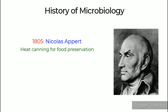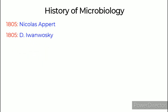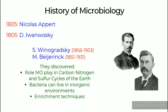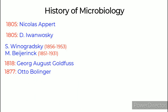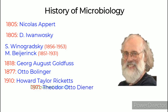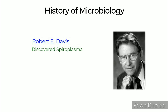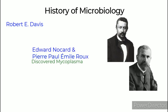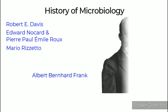History of General Microbiology: 1805 — Nicholas Appert discovered heat canning for food preservation. D. Ivanowski used filter techniques to discover viruses. Winogradsky and Beijerinck discovered the role microorganisms play in carbon, nitrogen, and sulfur cycles of the earth, and that bacteria can live in inorganic environments. George August Goldfuss coined the term protozoa. Otto Bollinger discovered Rhinosporidium. Howard Taylor discovered rickettsia. Theodore Diener discovered viroids. S.B. Prusiner discovered prions. Robert E. Davis discovered spiroplasma. Edward Nocard and Pierre Paul Émile Roux discovered mycoplasma.